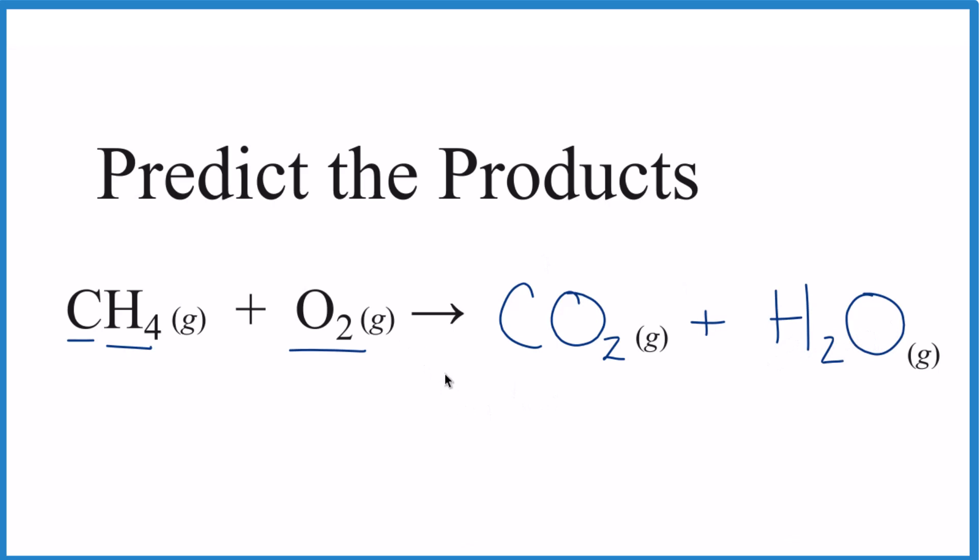We could balance the equation as well. We have two hydrogens here and four here. Put a two here. They're balanced. Two oxygens plus two is four. Only two here. Put a two here. That's the balanced equation.